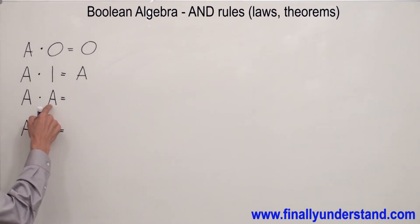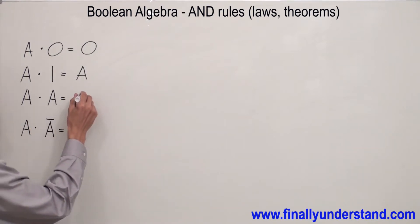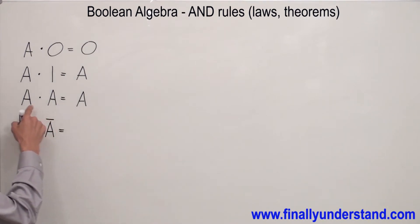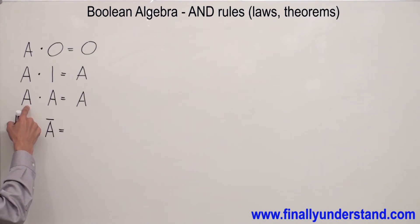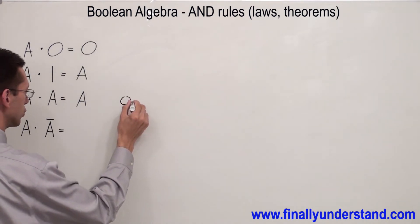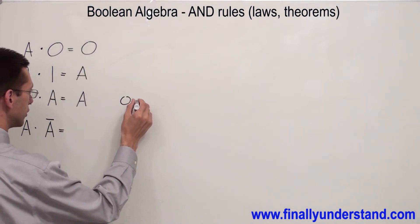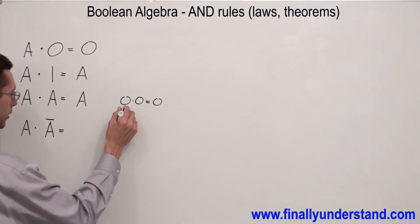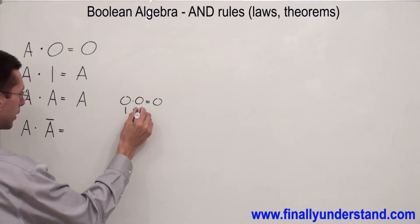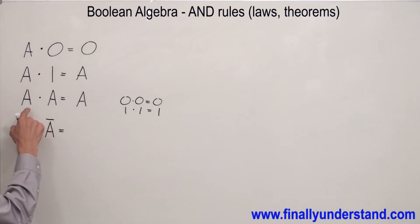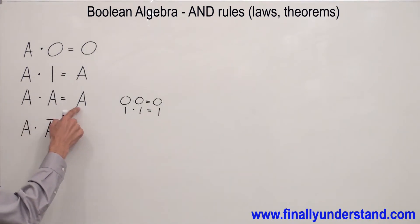A times A is equal to A. Someone could ask why A times A equals A. Remember that A is the variable, and A can be one or zero. So for example, if A is equal to zero, I have zero times zero and it gives me zero. If A is equal to one, I have one times one, and one times one is equal to one. So this is why A times A is equal to A.